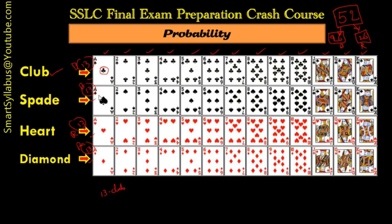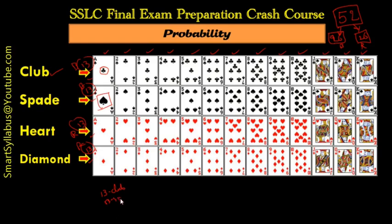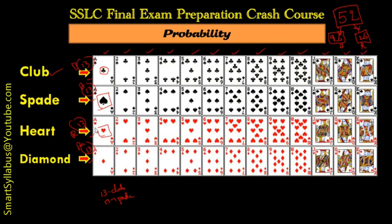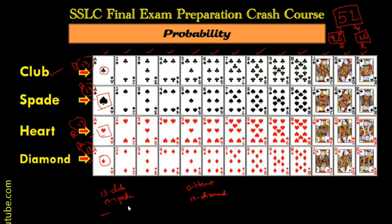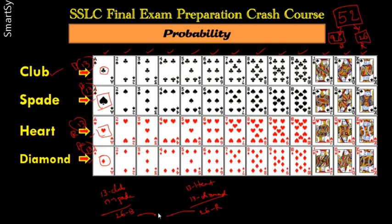The next shape looks like a leaf — this is called spade, so 13 spade cards. Then there is a heart shape — these are heart cards, so 13 heart cards. The last one is a diamond shape — there are 13 diamond cards. So club and spade (13+13=26) are black color cards, and heart and diamond (13+13=26) are red color cards, totalling 52 cards.